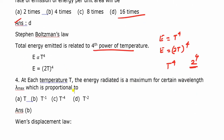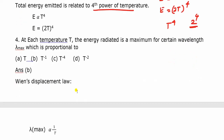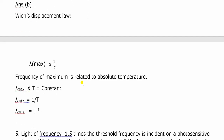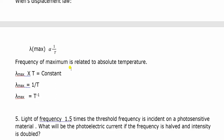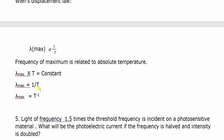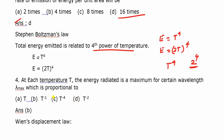Question number 4: At each temperature T, the energy radiated is maximum for a certain wavelength lambda max. By Wien's displacement law, lambda max is inversely proportional to temperature — lambda max equals 1 by T, or T inverse. Lambda max times temperature equals a constant. So the answer is B.